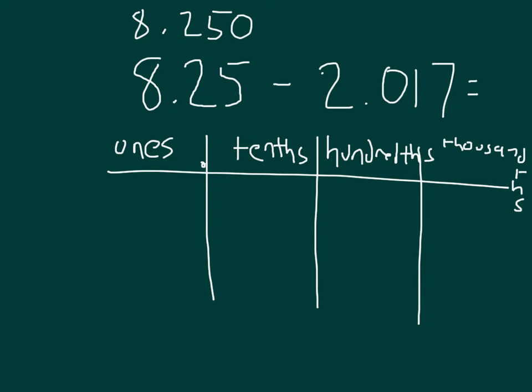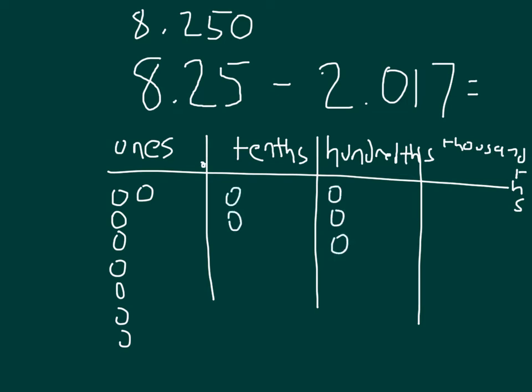We'll go ahead and put in that first number of 8.25 or 8 and 25 hundredths — 1, 2, 3, 4, 5, 6, 7, and 8 for the ones, 2 tenths, and 5 hundredths.